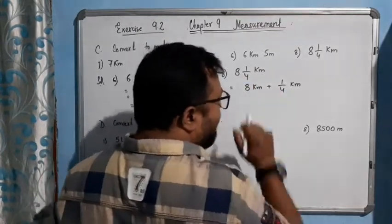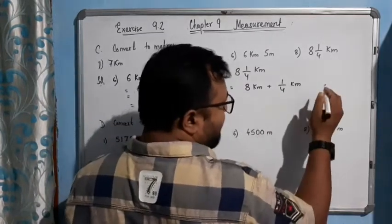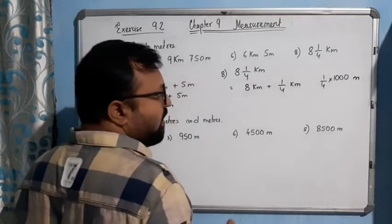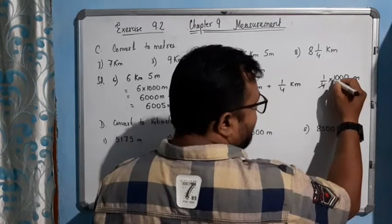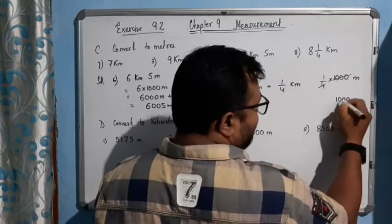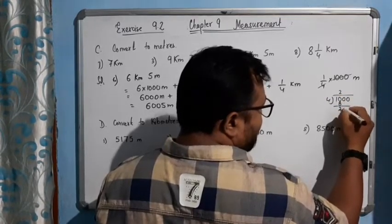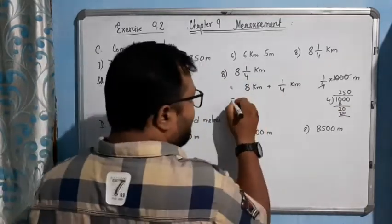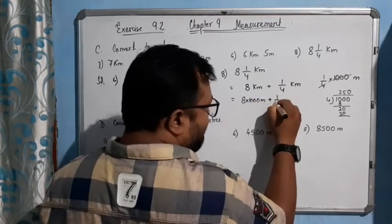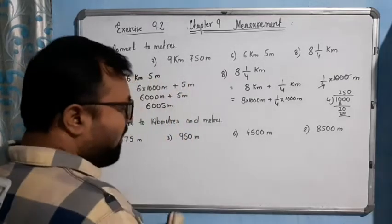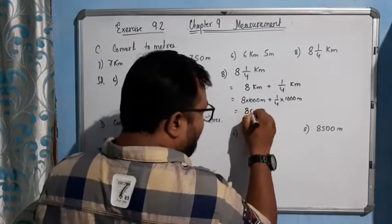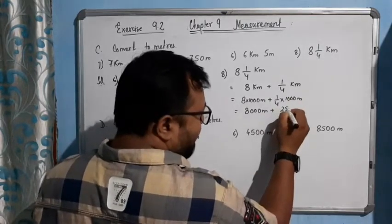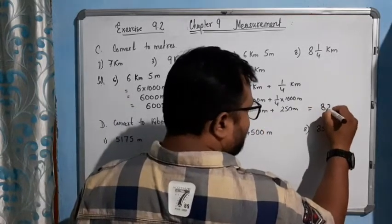1/4 of a kilometer means 1/4 of 1000 meters. Let me show you the division: 1000 divided by 4 gives 250. So this is 8 into 1000 meters plus 1/4 into 1000 meters, which is 8000 meters plus 250 meters, giving a total of 8250 meters.